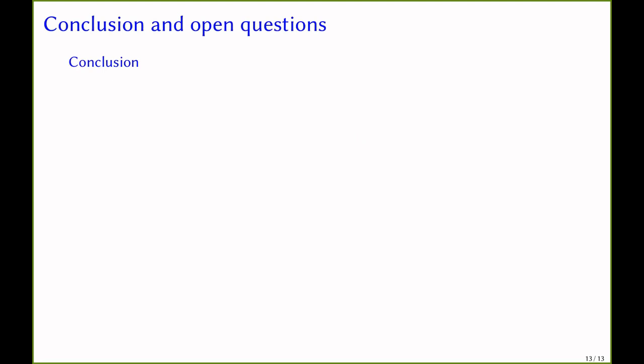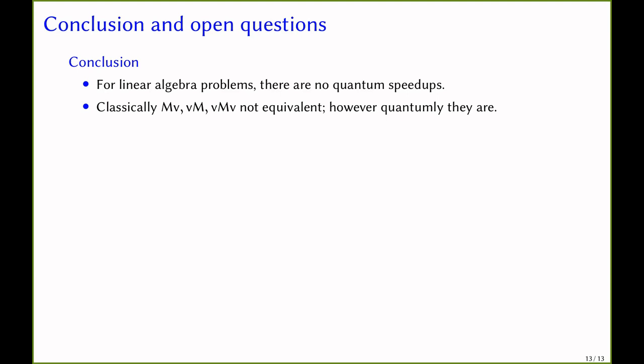In summary, I was trying to share our findings about quantum query complexity with matrix-vector products. For linear algebra problems — trace, determinant, rank testing, and linear regression — we proved linear lower bounds. We also discussed the relationship between the query models: classically they are not equivalent, but the quantum query complexities differ by at most a constant factor. Furthermore, we showed that the quantum equivalence of these models leads to exponential speedups for a few problems.